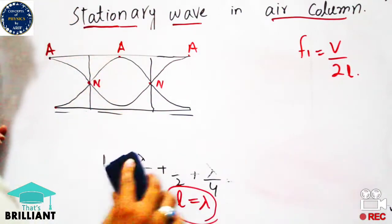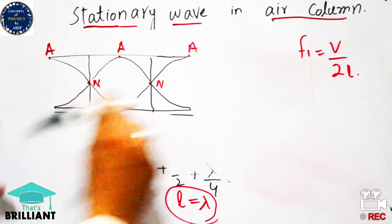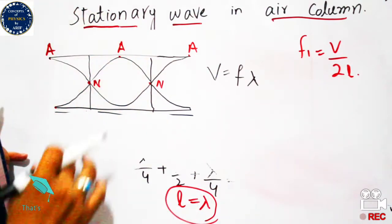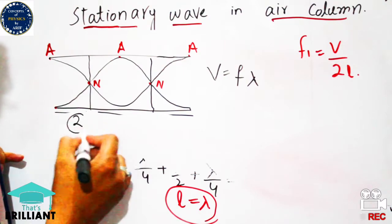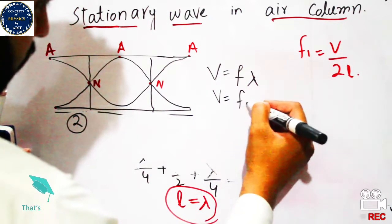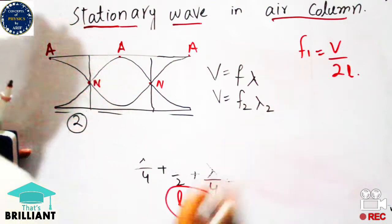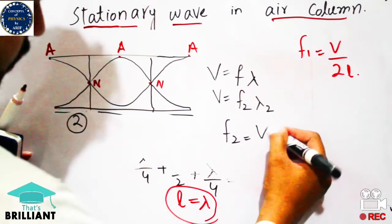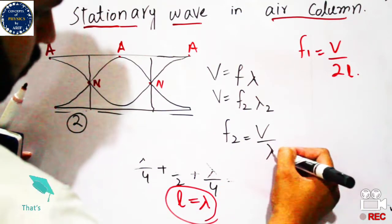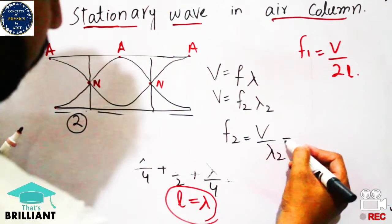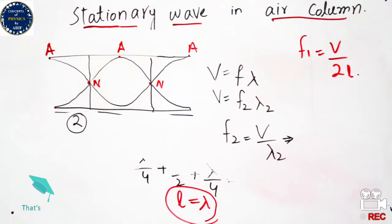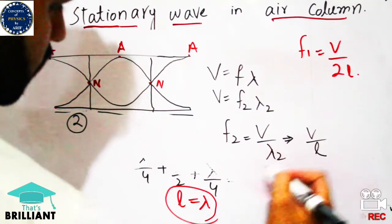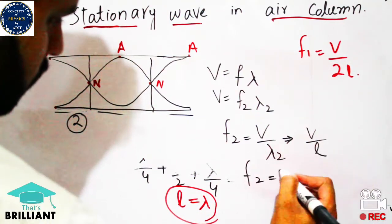The frequency and wavelength are labeled with subscript two, so L is equal to lambda two. Using v equals f2 times lambda two, in order to calculate the frequency: f2 is equal to v over lambda two. Substituting the value of lambda two, which equals L, the expression becomes f2 is equal to v over L. This is the expression for the frequency of mode two.